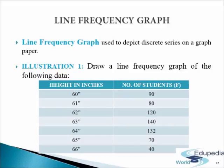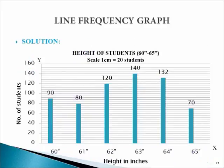In the illustration, we are provided with a table. In the table there are two columns: first, height in inches, and second, number of students, i.e. frequency. We have to make a line frequency graph and plot this data on it. From the given data, let us make a line frequency graph. First, we will write the heading, i.e. height of students from 60 inches to 65 inches. For this particular graph, we have taken a scale of 1 cm equals 20 students.